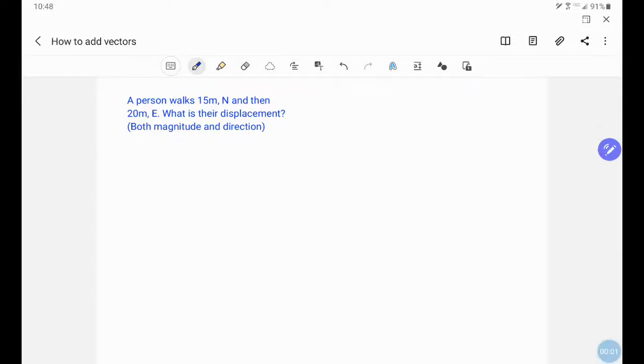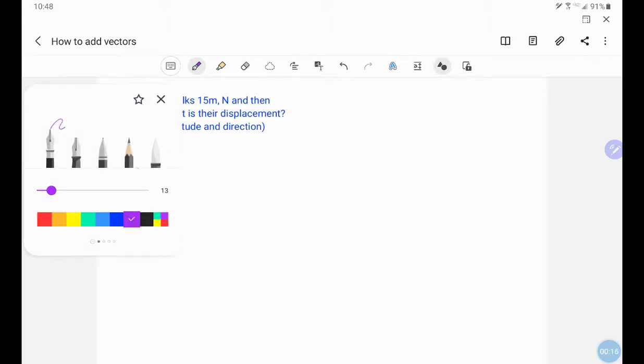Hi guys, I wanted to make a quick video on just how to add two vectors together. It says a person walks 15 meters north and then 20 meters east. What is their displacement, both magnitude and direction?